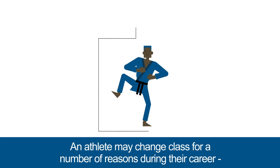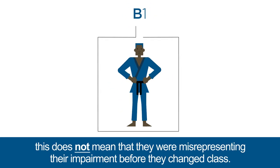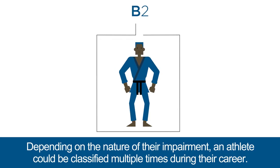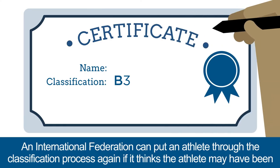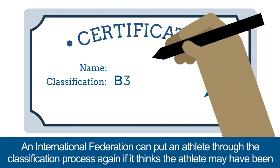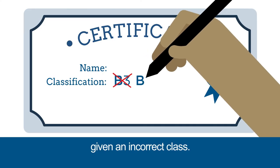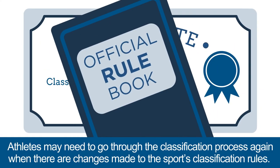An athlete may change class for a number of reasons during their career. This does not mean that they were misrepresenting their impairment before they changed class. Depending on the nature of their impairment, an athlete could be classified multiple times during their career. An international federation can put an athlete through the classification process again if it thinks the athlete may have been given an incorrect class. Athletes may also need to go through classification again when there are changes made to the sport's classification rules.